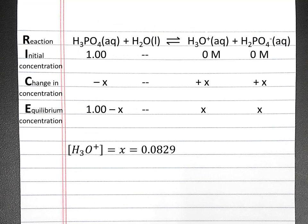Going back to our RICE table, we note that the hydronium ion concentration is equal to x, which is 0.0829. To calculate pH, we'll have pH equals negative log of the hydronium ion concentration, which is 1.08. So the pH of our polyprotic acid solution will be 1.08.